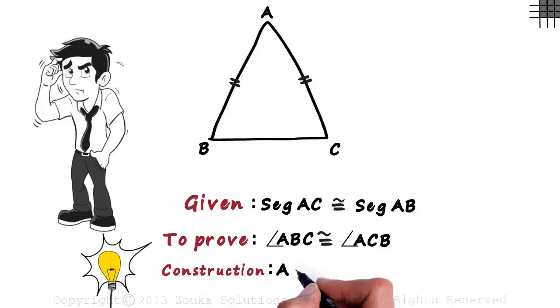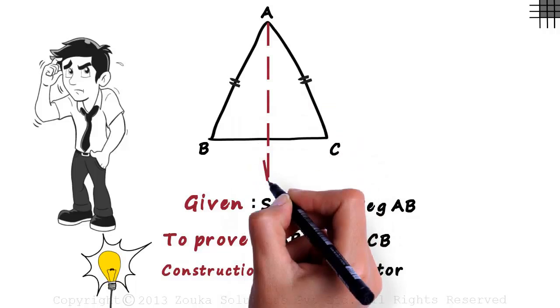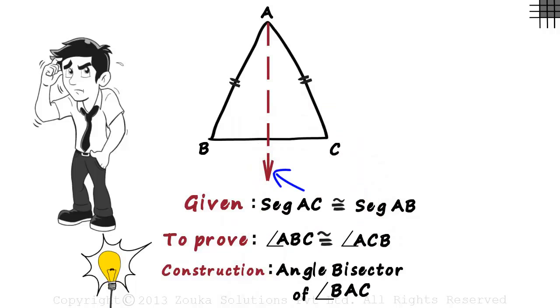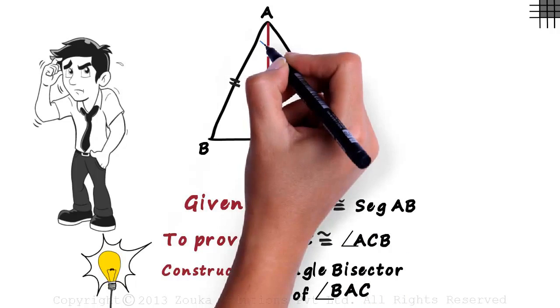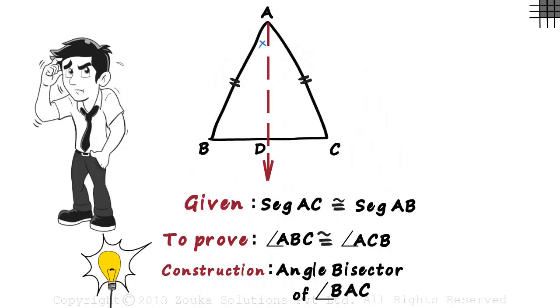Let's draw the angle bisector of angle BAC. We are talking about this angle. So we draw the bisector like this. Let this red dotted line be the angle bisector of angle BAC and let it intersect BC at point D. Measure of angle BAD will equal that of angle CAD. Now we have two triangles: triangle ABD and triangle ACD.